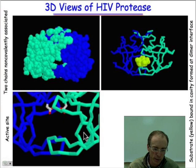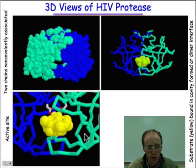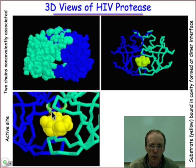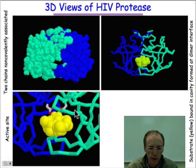We can put the substrate in place, and there it is. The substrate is shown in yellow. We see those two aspartyl groups hanging into the carbonyl group of that peptide bond that undergoes fragmentation.